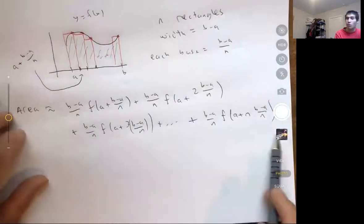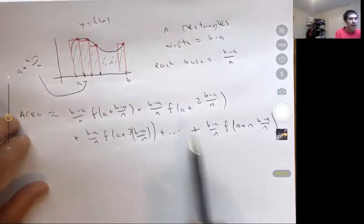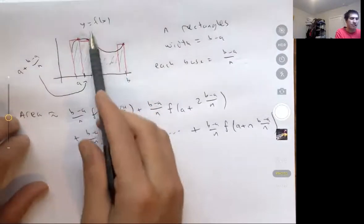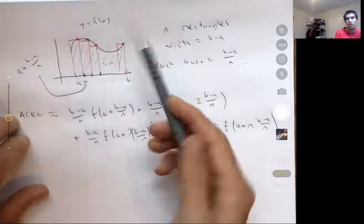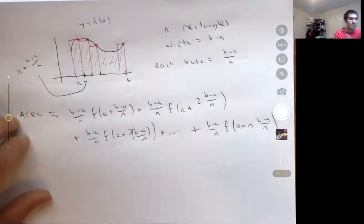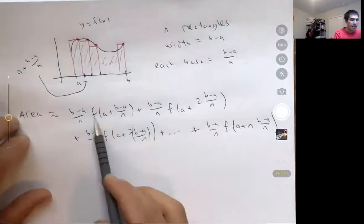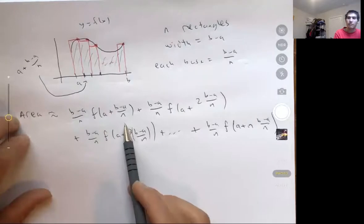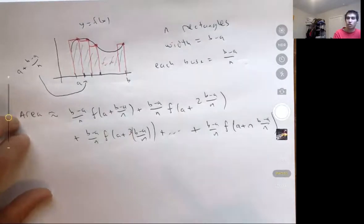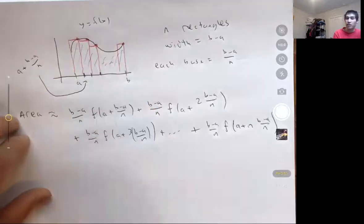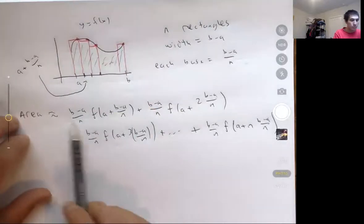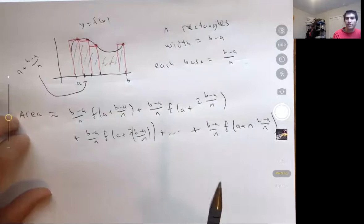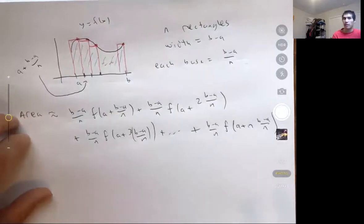This is the formula for our approximate area. Whatever the function is — say f of x is x cubed or sine of x — I can use this definition to get an approximation using n rectangles. One note: this assumes the function is positive, so all heights are positive. If the function goes below the x-axis, we have to be a little careful, but I'll talk about that in a later video.